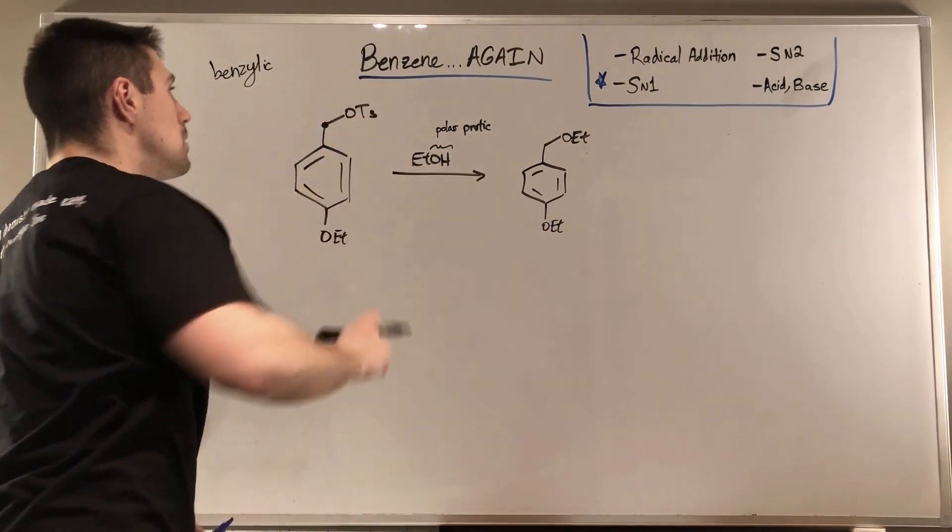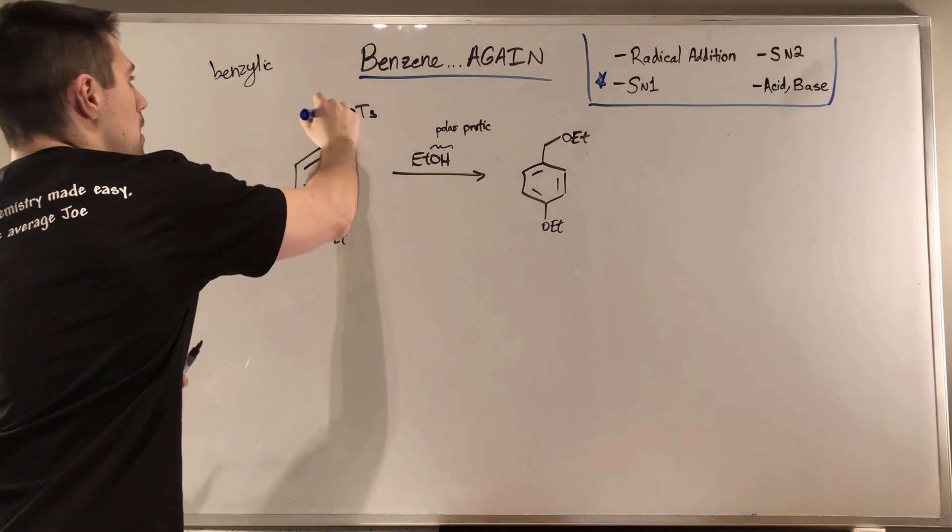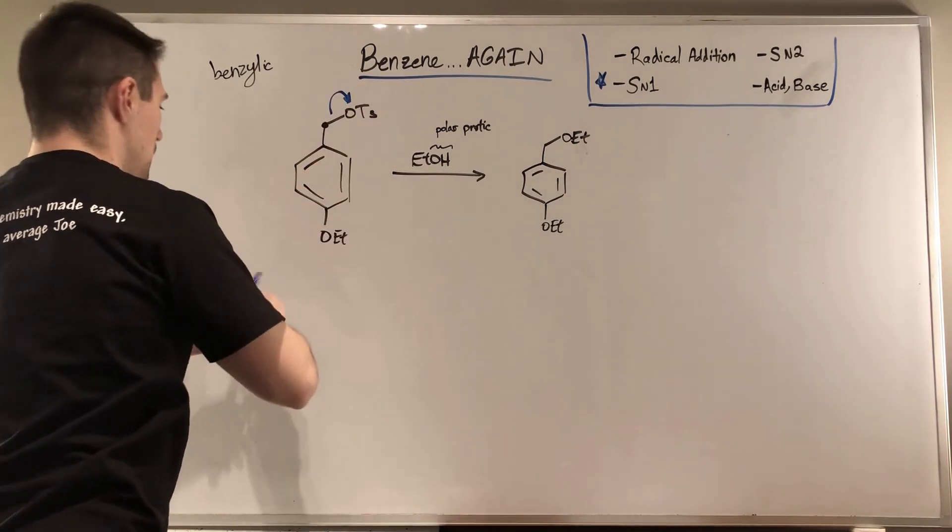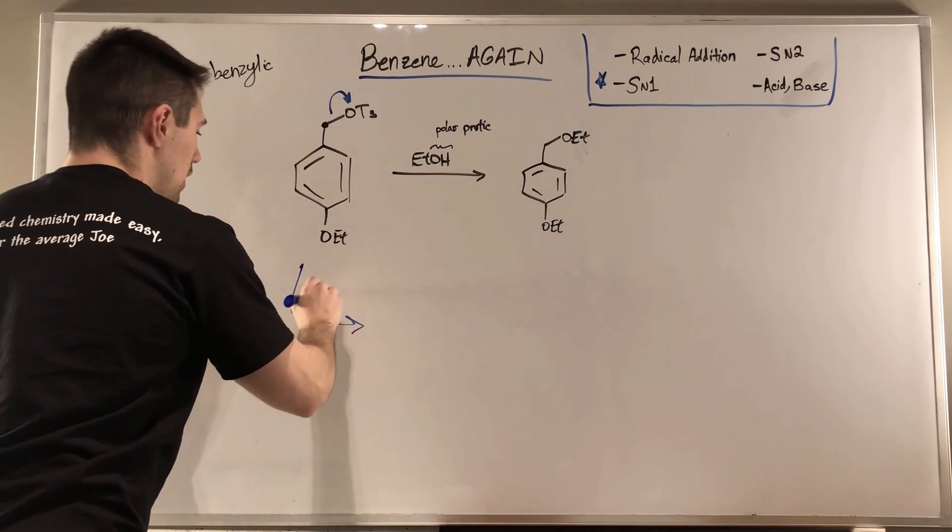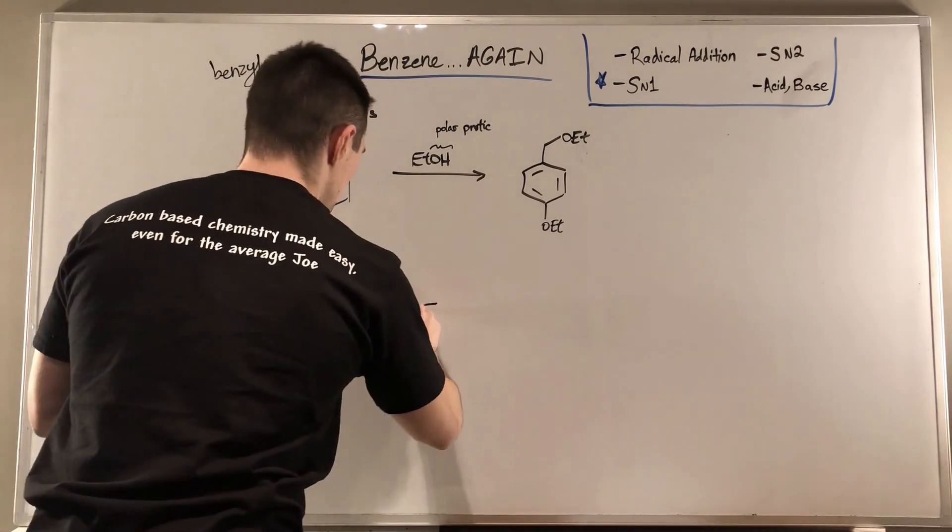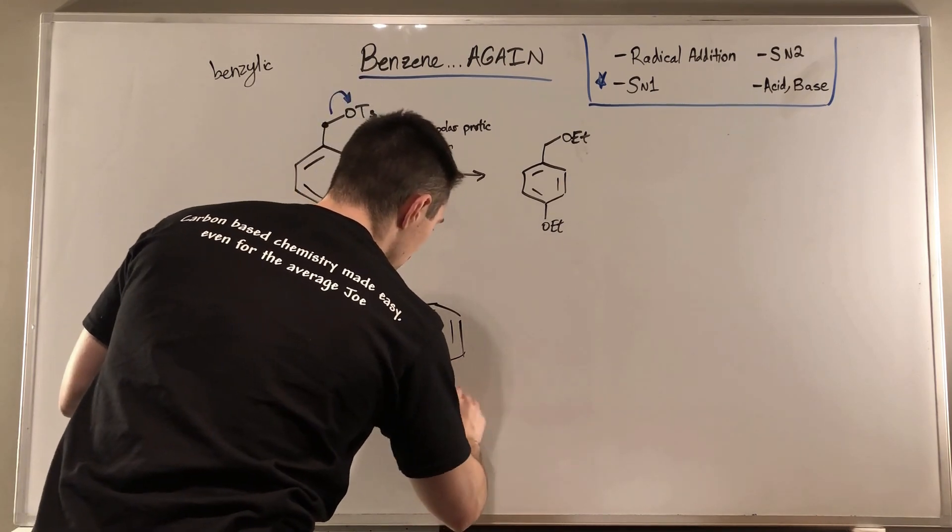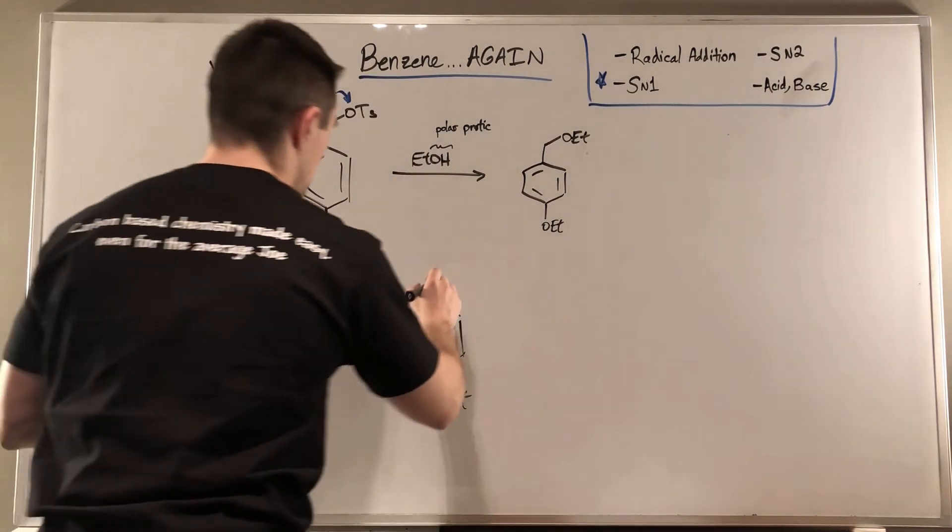So since this is a polar protic environment, we look good for SN1, because we can perform solvolysis. We do have to double check that we have a good leaving group on our carbon that we want to attack. And this is a tosylate group, which is an excellent leaving group. So for a first step, we just have the leaving group leave. So this would be our solvolysis step. So nothing new here.